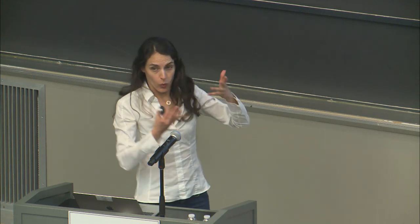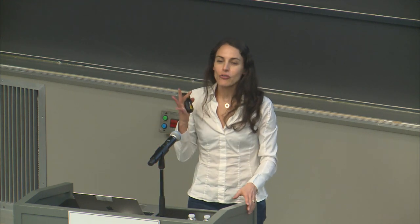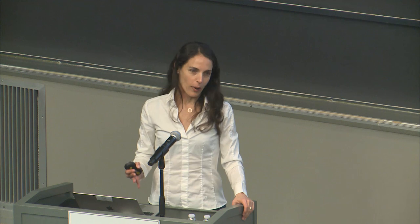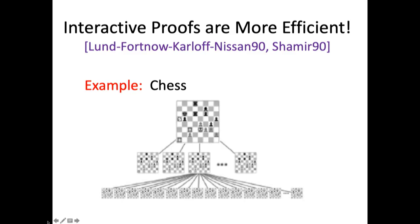Now we have interactive proofs. It turns out these interactive proofs are wonderful even if you don't care about hiding anything, because they're much more efficient. For example, take a chessboard configuration. Suppose I want to prove to you that the black player has a winning strategy. With a classical proof, it's going to be very long — I need to show you that for every move of the white, there is a counter-move of the black, and so on. It's going to be an exponential tree — a very long proof. However, with an interactive proof, I can do it very efficiently.